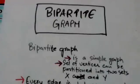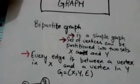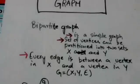Hello friends, welcome back. In this tutorial we will study about bipartite graphs. A bipartite graph is a simple graph in which the set of vertices can be partitioned into two sets X and Y, such that every edge is between a vertex in X and a vertex in Y.